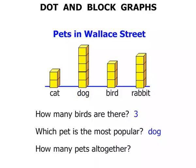How many pets altogether? Well, what we need to do is count the number of blocks: one, two — we had two cats there — three, four, five, six, seven, eight, nine, ten, eleven, twelve, thirteen, fourteen. So fourteen pets altogether.